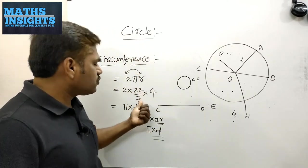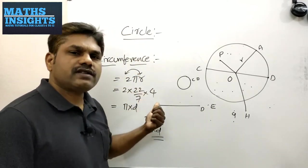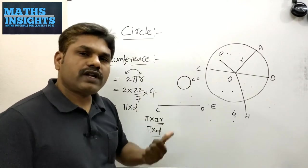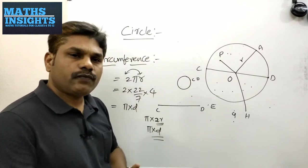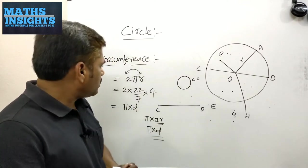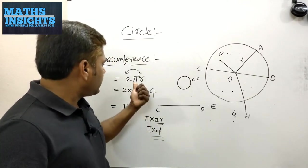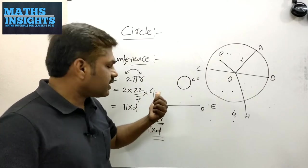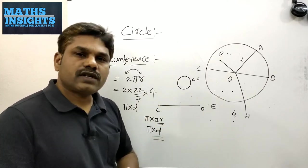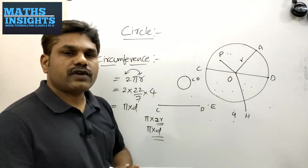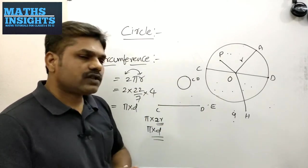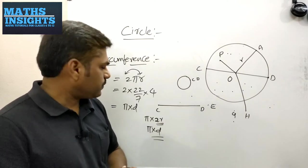Pi is an irrational number — its value is 22 by 7, not a rational number. If you want the history of irrational numbers, I have made a separate video which you may watch.